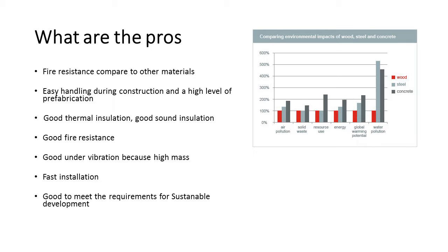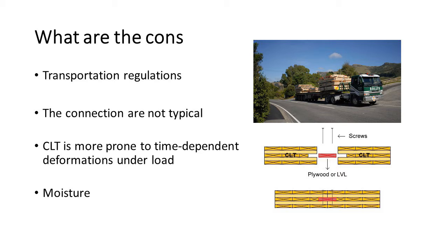For the cons: transportation regulations may impose limitations on CLT panel size, and CLT is limited to floor, roof, and wall applications. Connections are not typical, and designers need to be cautious, as further verification is required considering the specific features of individual panel types. CLT is also more prone to time-dependent deformations under load — creep — than other engineered wood products such as glued laminated timber. Additionally, CLT panels can be affected by moisture problems.